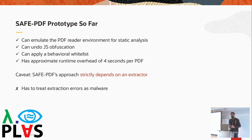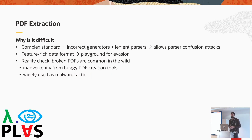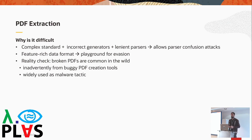There is still one problem: our approach strictly depends on being able to extract JavaScript code from a document. If the extractor fails for any reason, we must treat that failure as a sign that the document is malicious, leading to false positives. PDF extraction is problematic because the PDF standard is fairly complex, many document generators produce not completely correct output, and parsers in reader applications are quite lenient and error-correcting. This means a reader application might parse a partially broken PDF that a malware detection extractor cannot, and these parser confusion attacks do happen in the real world.